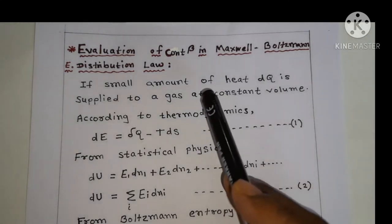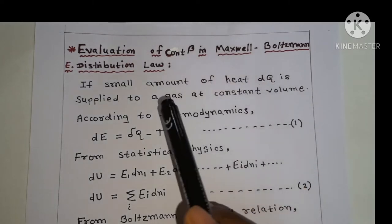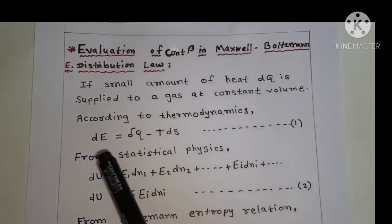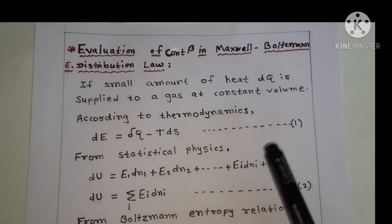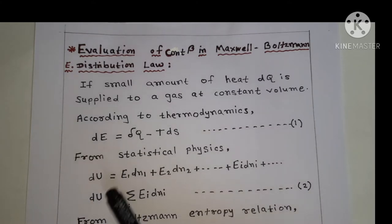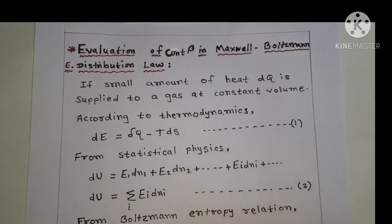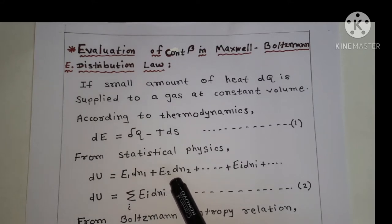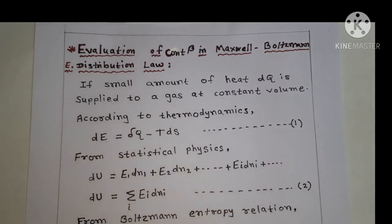Students, if a small amount of heat dq is supplied to a gas at constant volume, according to thermodynamics, dF is equal to dq minus T·dS — Equation 1. From fundamental postulates of statistical physics, the number of particles remains constant in the system, and the total energy of the system remains constant. So here u is the total energy of the system, and du is equal to e1·dN1 plus e2·dN2 plus ... ei·dNi, that is, du equals summation of ei·dNi — Equation 2.